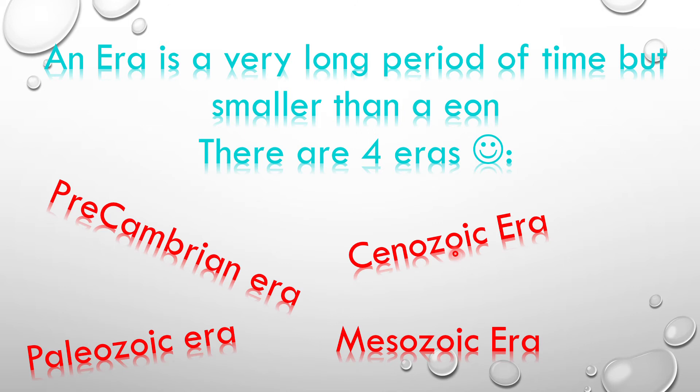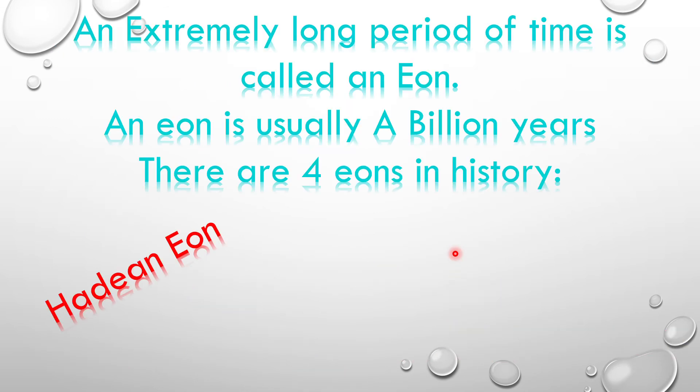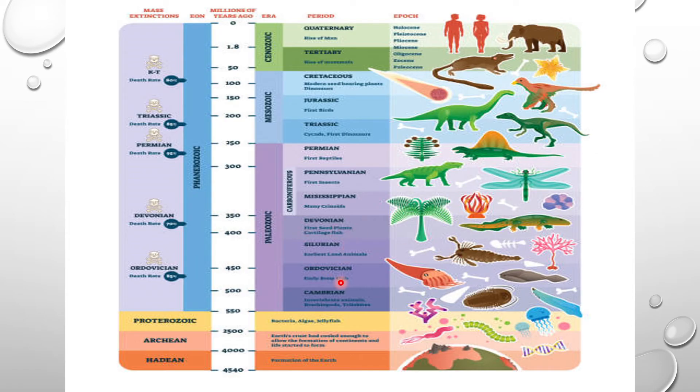We got to know about period, era, and eons. In this timeline they haven't given information about the Precambrian era, but it is here before the Paleozoic era. Precambrian era has two parts: Archean and Proterozoic period. Earth started to form 4.6 billion years ago. Bacteria appeared 3.2 million years ago. 2.1 million years ago oxygen started to form in the atmosphere. It was raining.